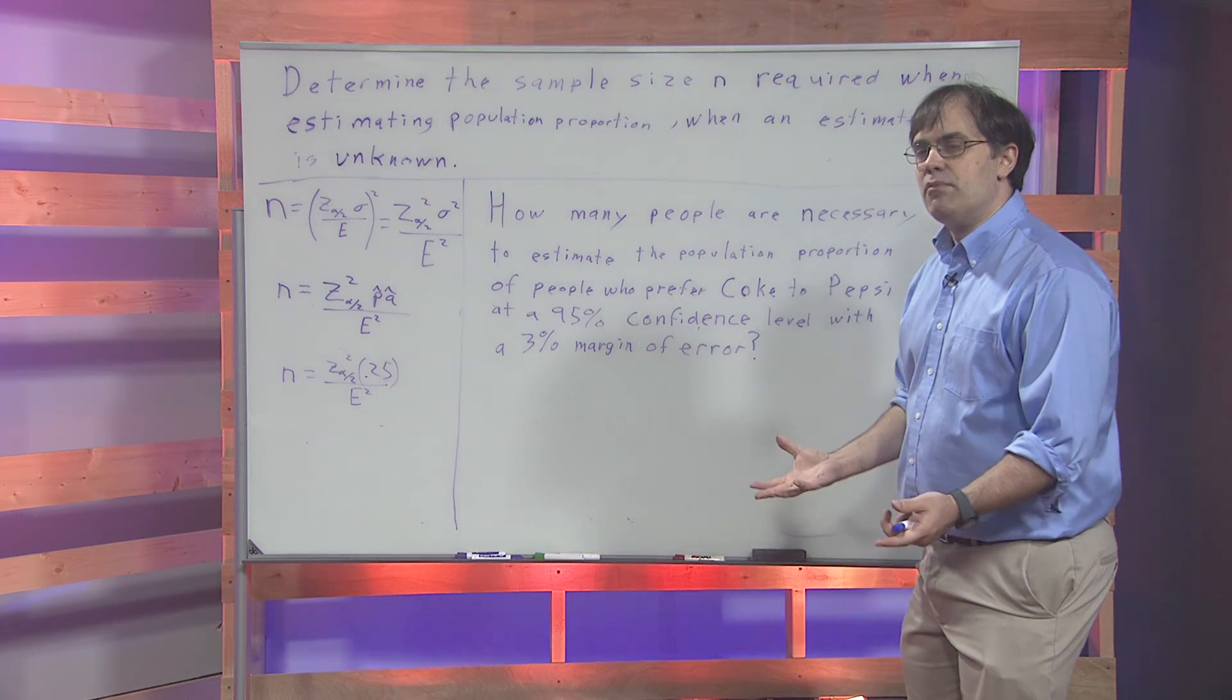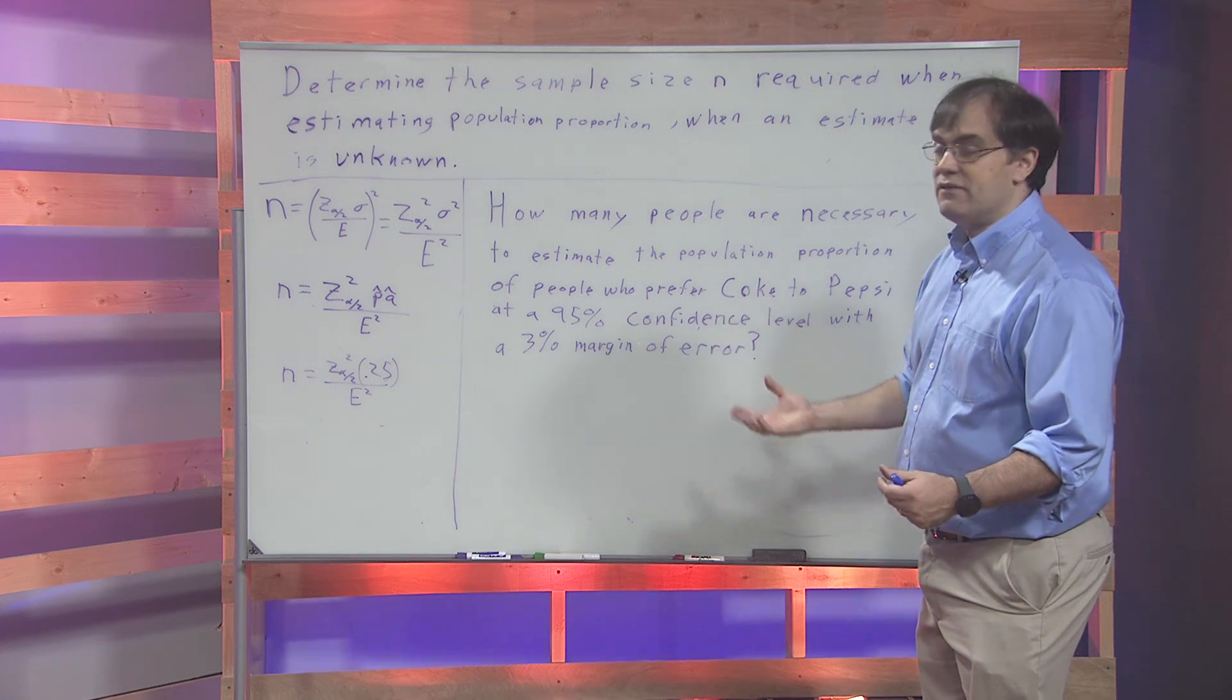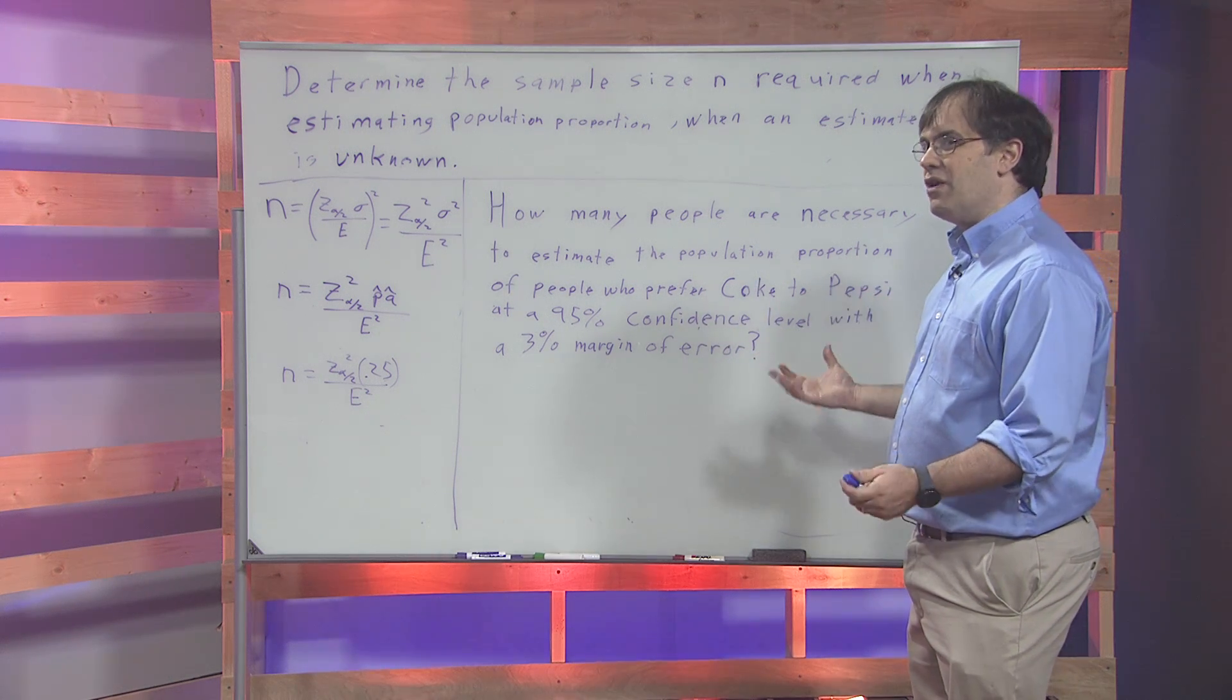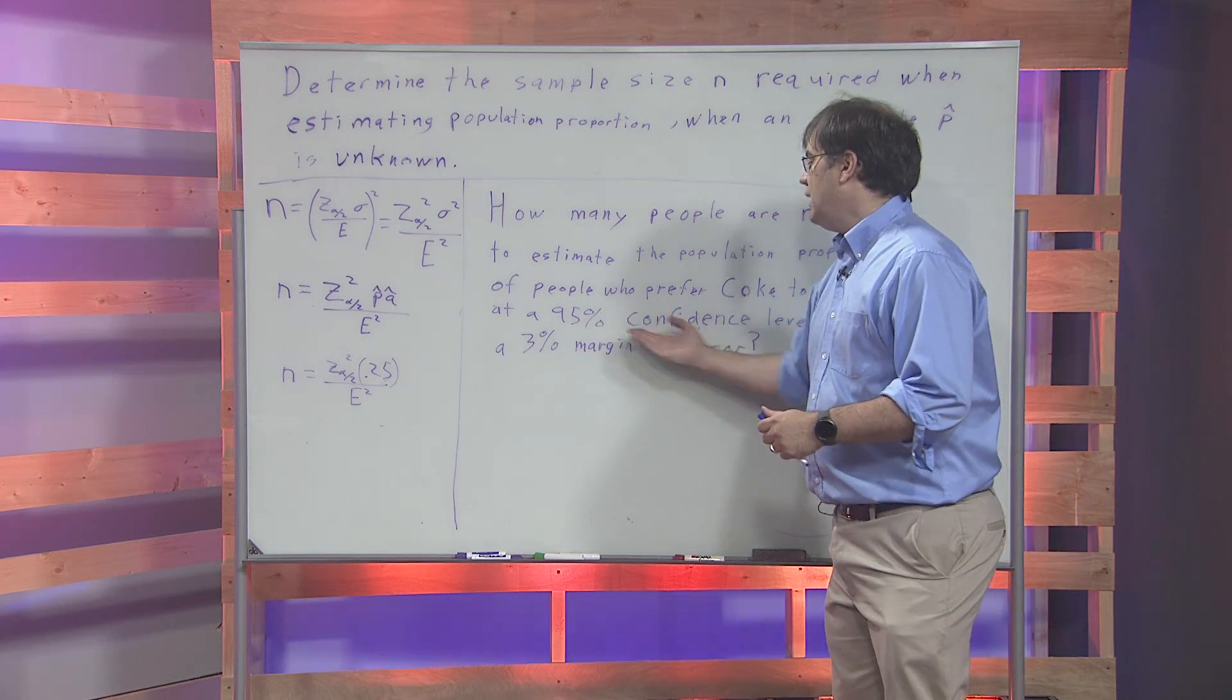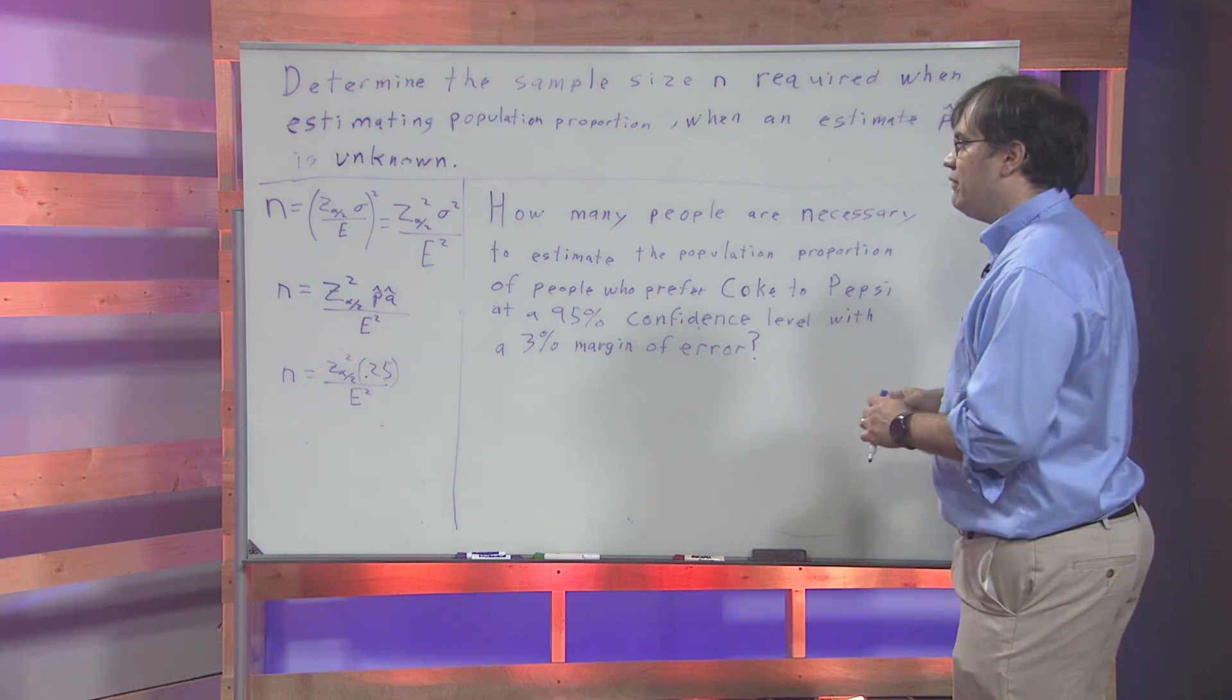In general, this formula gives you a number that's larger. When you don't have any previous knowledge, you have to ask more people in order to get the same level of confidence.